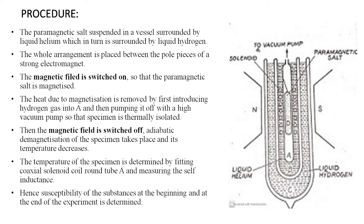The second case is in the absence of the magnetic field — demagnetization. When the magnetic field is switched off, adiabatic demagnetization of the specimen takes place and its temperature decreases, because the atoms return to their original randomly oriented directions. The temperature of the specimen is determined by fitting a coaxial solenoid coil around the tube and measuring the self-inductance. Hence, the susceptibility of the substance at the beginning and at the end of the experiment is determined.